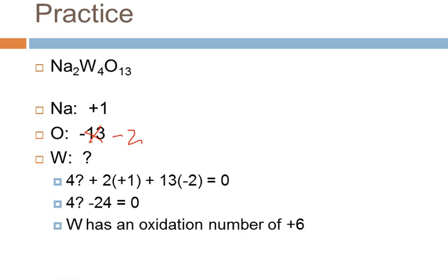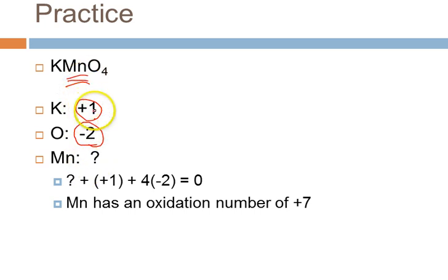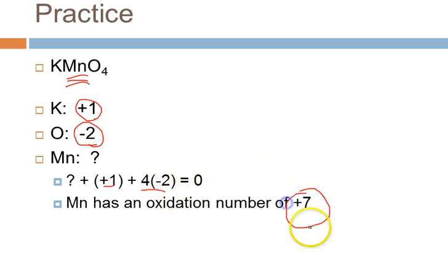The last practice problem: KMnO4, potassium permanganate — a really important compound. Potassium has an oxidation number of plus one. Each oxygen has an oxidation number of minus two, and there are four oxygens. There's no strict rule for manganese since it can take a range of oxidation states. Setting up the algebra: one potassium at plus one, four oxygens each at minus two, sum equals zero — we get plus seven for the manganese. That's a very high oxidation number, making this a very reactive substance. I hope you feel comfortable with oxidation number assignments, and we'll meet again another time.